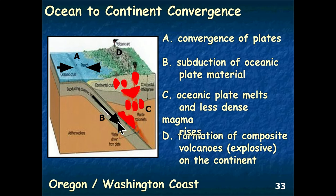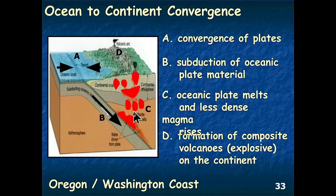As we discussed with metamorphic rocks, the ocean plate reaches a depth of about 150 kilometers below Earth's surface, where temperatures and pressures are high enough to begin melting it. This produces copious amounts of magma. Magma, being liquid, is less dense than surrounding rock and tends to rise toward the surface — analogous to a beach ball rising in a swimming pool.